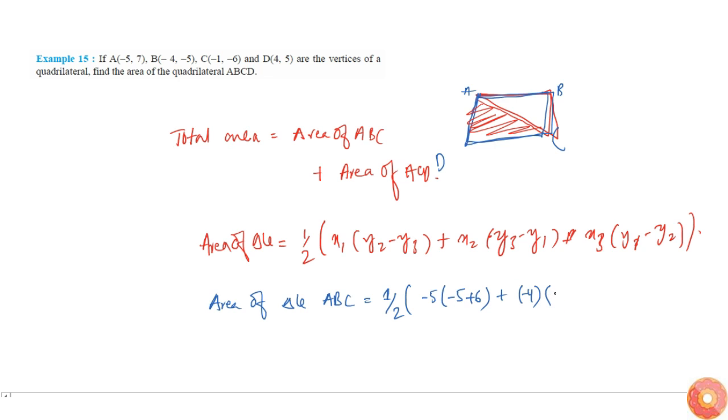plus X3 into, that is X3 is simply minus 1 into 7 minus of minus 5 that is plus 5. So this area is simply...